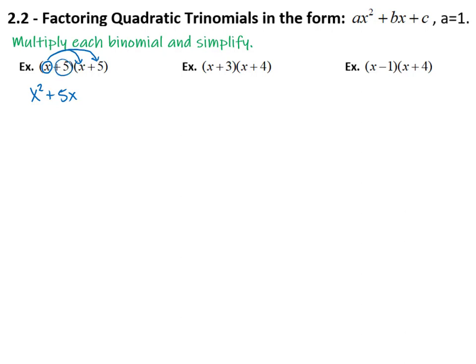Now we come back and distribute this positive 5. Positive 5 times x gives us another 5x, and 5 times 5 gives us 25. We do have some like terms in the middle here that we would combine. Five x's and another 5x's gives us 10x plus 25. So we end up with x squared plus 10x plus 25.